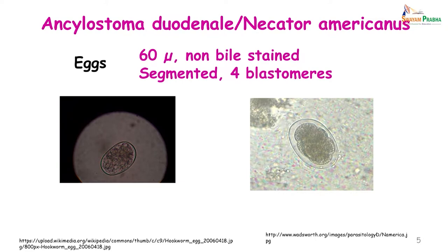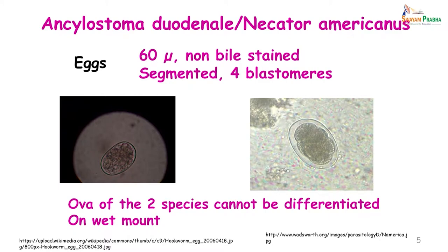Coming to the morphology of Ankylostoma duodenale and Necator americanus, their eggs or ova are 60 microns in size, non-bile stained, segmented, and show the presence of 4 blastomeres. It is difficult to distinguish the eggs of both these worms in a wet mount, though there have been reports that eggs of Taenia saginata are identified first. However, more studies need to be done in this field.